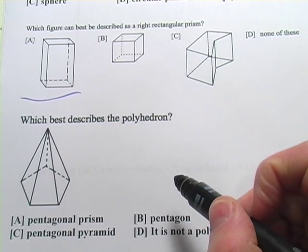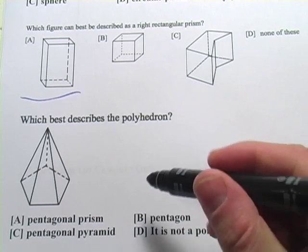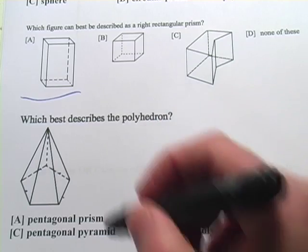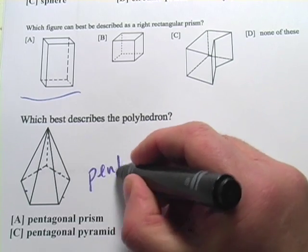And this one says, which best describes the polyhedron? So let's take a look at this one. We have, on the base, we have one, two, three, four, five sides. So that's a pentagon on the base.